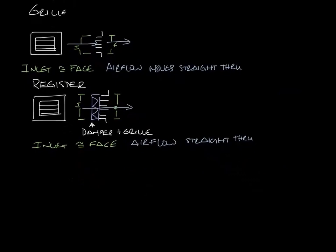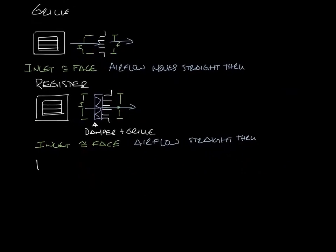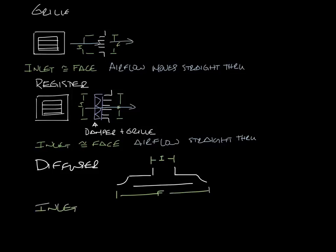Now diffusers. A diffuser typically looks something like this, where you've got the neck up here and then some sort of face plate. In this case, I'm drawing our omni diffuser. Your inlet or neck is smaller than the face of the diffuser. The airflow comes in at the neck and goes out along the ceiling, so the airflow makes a 90-degree turn and exits at a different angle than it came in.